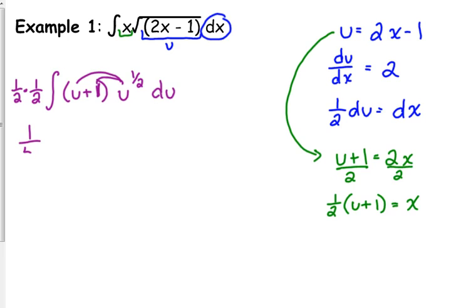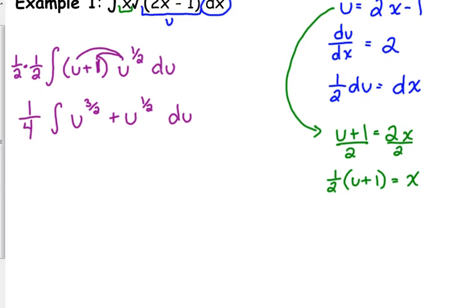We need to distribute that 1 half. So we have 1 fourth times the integral of u times u to the 1 half is u to the 3 halves. And u to the 1 half times 1 is u to the 1 half. Now, if we integrate that with respect to u, we get add 1 to the exponent. 3 halves plus 1 is 5 halves, divide by the new exponent, so that flips and becomes 2 fifths. Plus, same thing happens with this one. Add 1, we get 3 halves, divide by the new exponent, so that fraction flips and it becomes the 2 thirds. Don't forget your plus c on the end.